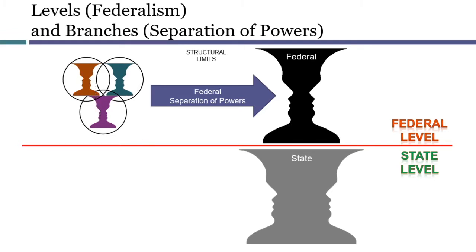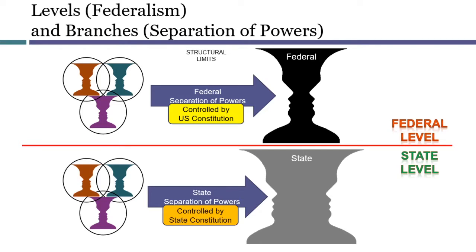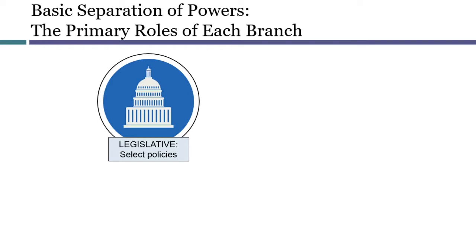At the federal level, separation of powers is found in the U.S. Constitution. At the state level, all of the states have some roughly analogous version of separation of powers, but the details of those will be established by state constitutions and not the U.S. Constitution. Modern separation of powers begins with a legislature that has responsibility for deciding the policies that the government will pursue, ordinarily expressed in legislation or other congressional action.